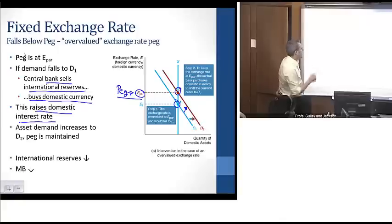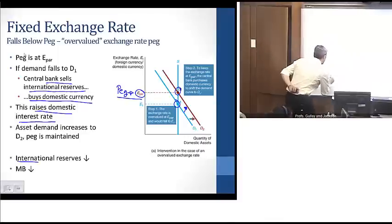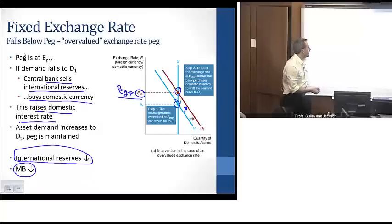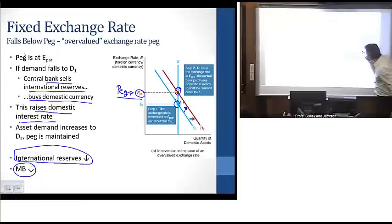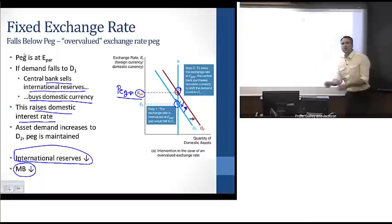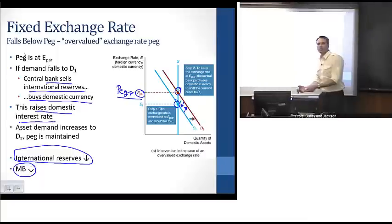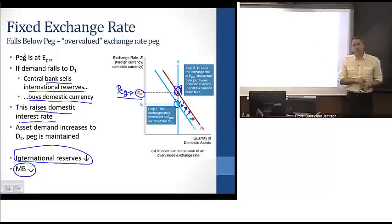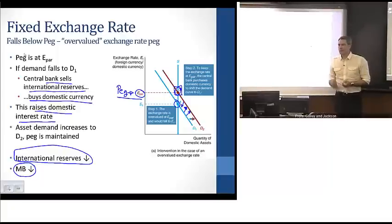It's important to note that in this process, the central bank's international reserves decline, and the monetary base also falls. As long as there's persistent pressure on the exchange rate to devalue, the central bank must constantly intervene — drawing down international reserves, pushing interest rates up, and pulling demand back up — in order to maintain the exchange rate at E-par.